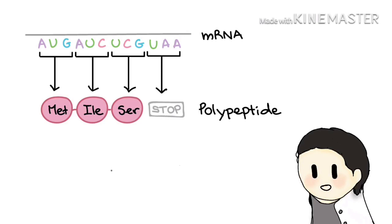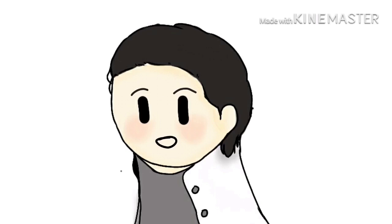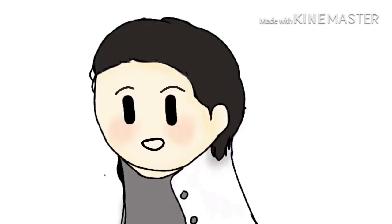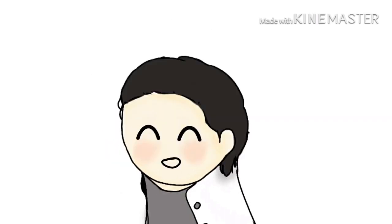There are three more codons that do not specify amino acids. These stop codons — UAA, UAG, and UGA — tell the cell when a polypeptide is complete. All together, this collection of codon-amino acid relationships is called the genetic code, because it lets cells decode an mRNA into a chain of amino acids.